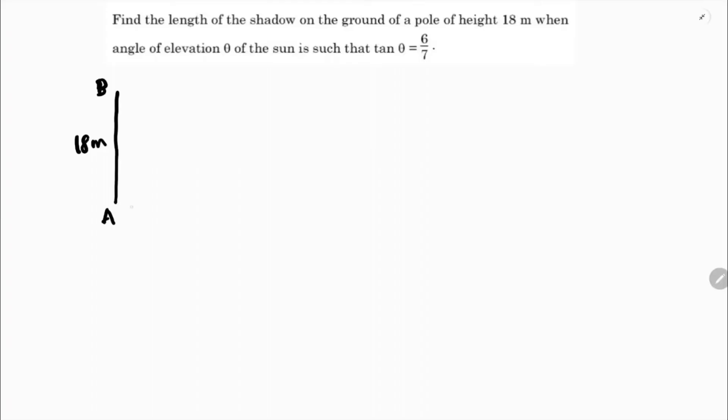18 meters when angle of elevation is theta. We need to find the length of the shadow, so we need to find x. And angle of elevation is theta. So this is the opposite side, opposite to theta.